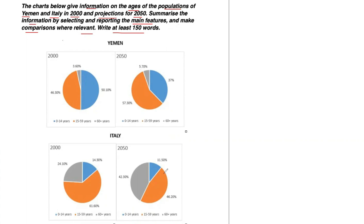A big problem with this type of question is that students usually just discuss every single piece of information in each pie chart without comparing. We have to write 150 words, and you're probably going to write more than 150 — aim for around 200 words. If you find yourself going too far over 200, like 220, that is too much. You'll have to practice being concise and understanding what the main features are. Make sure you are comparing and do not get carried away.